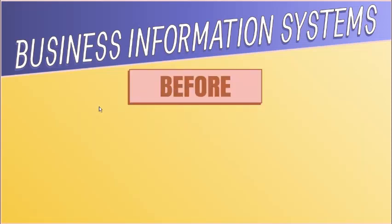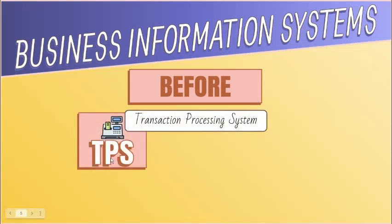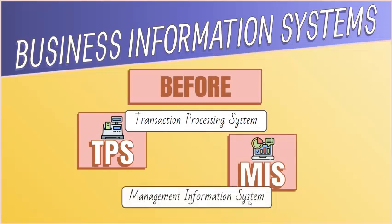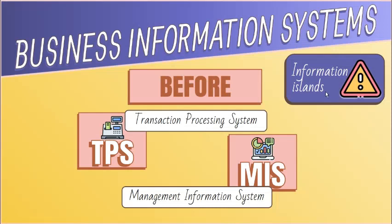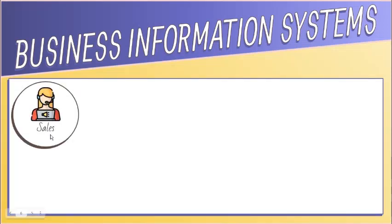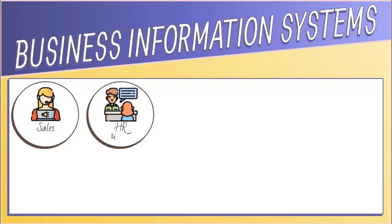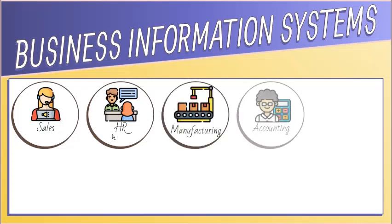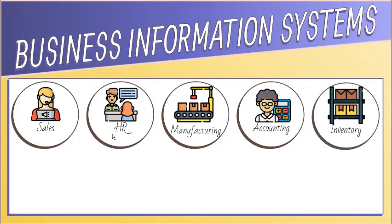Information systems are divided into different categories. Some categories are those systems that support an organization's day-to-day business activities, like transaction processing systems, and systems that support managerial decision-making, like management information systems. As the use of technology grew in businesses, so too did the problem of information islands, which happen when separate, independent information systems are developed. For example, sales and marketing, operations, human relations, and finance each built their own systems that were not connected to one another, thus could not share data across the enterprise — becoming a big hindrance to organizational success.